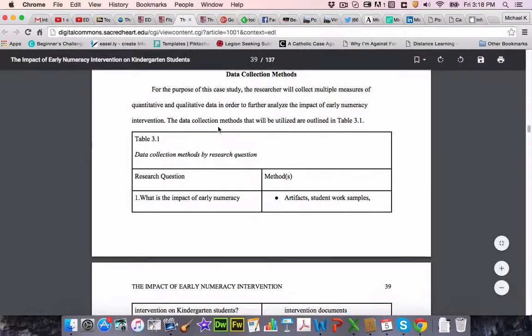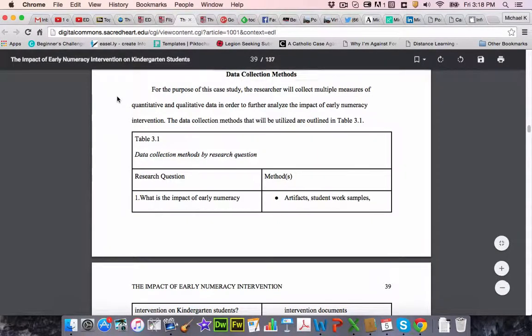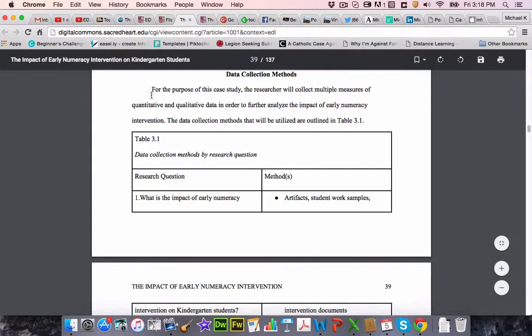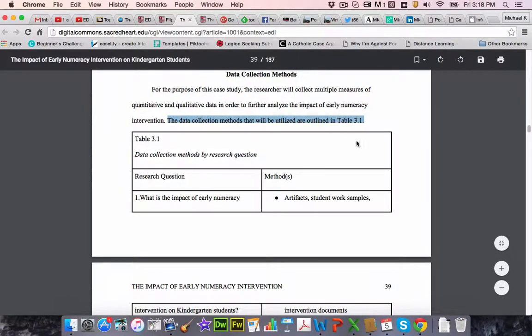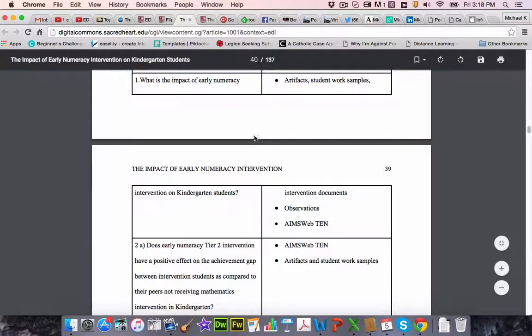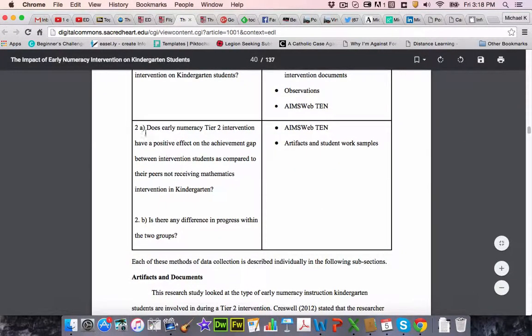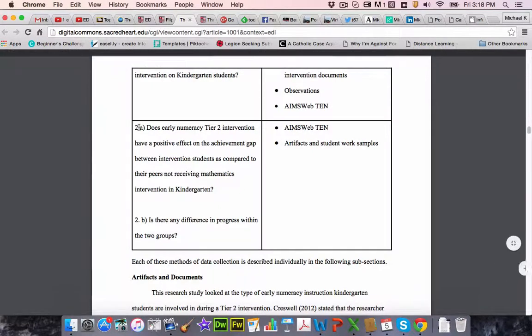To look at another example, here's one from a student, Jen Hill, whose thesis was on the impact of early numeracy interventions on kindergarten students. So you can see again, she reminds us of what the purpose of the study is, and then she says my data collection methods are here in this particular table. So when you look at the table, she actually has three research questions. So here's the first research question, what is the impact of early numeracy intervention on students, and she's actually using artifacts, observations, and the AIMS Web 10 as her data that she's using to answer that question. And then she has the second question that actually has two parts, and she's using the AIMS Web 10 assessment and artifacts as a way of answering that particular question.